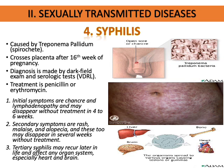Even without treatment, the initial symptoms of syphilis may disappear in four to six weeks, but the infection is still progressing. Secondary symptoms include rashes, alopecia, which may also disappear in several weeks. When tertiary symptoms appear, it is dangerous because the infection recurs later in life and can affect any organ system, especially the heart and brain.